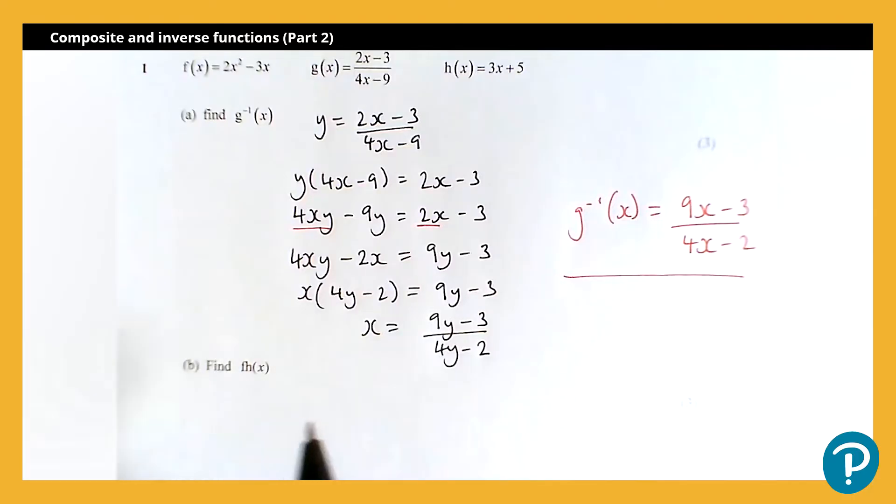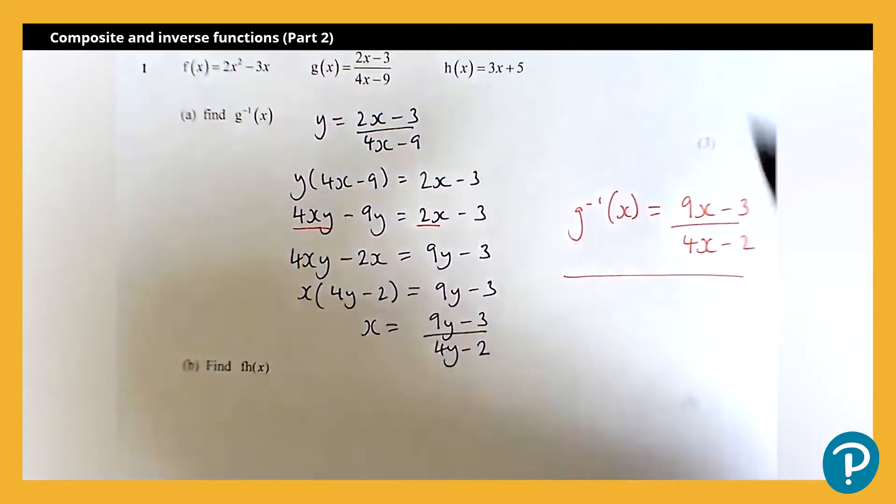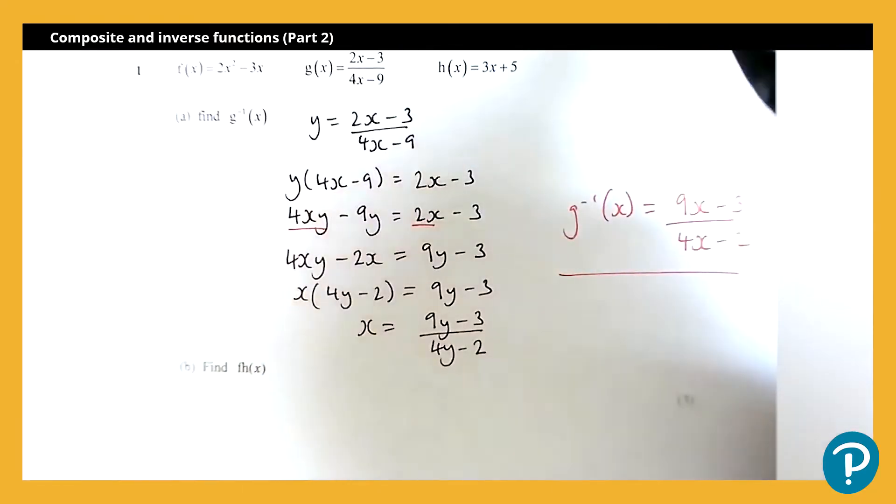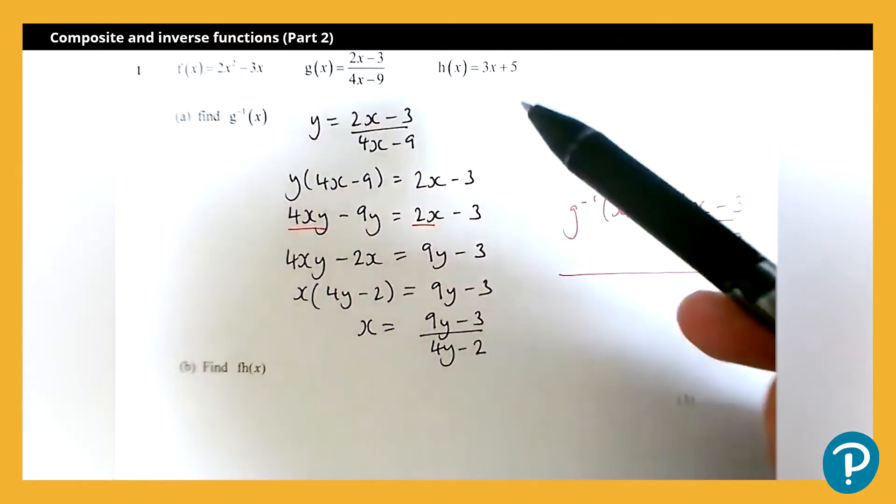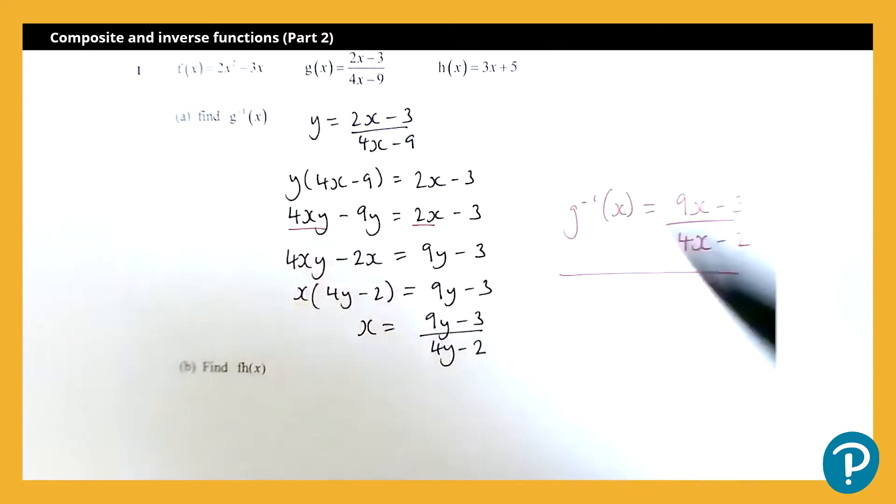if we're asking us to find f h of a value, by far the easiest method would be to substitute that value into h of x to get a value out, and then substitute that remaining value into f of x to get your final value.